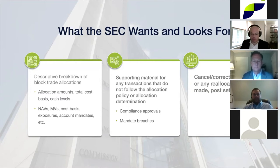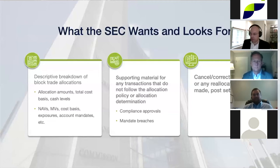Examiners also ask for a list of IPOs and secondaries and how they were allocated, profitable and least profitable positions, and monthly performance across similar client accounts. They take all this information and piece it together to begin their process of reviewing trade allocations.